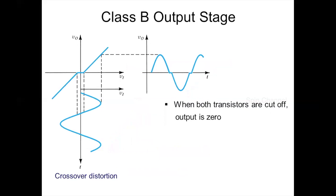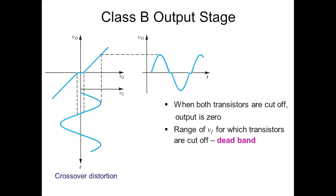This dead band results in crossover distortion on the output signal. Due to the dead band, the output is not smooth — a small distortion is observable. This distortion, called crossover distortion, happens as the signal crosses from one transistor to the other, completely distorting the output signal. This non-linearity makes the Class B push-pull amplifier unacceptable for some power applications.